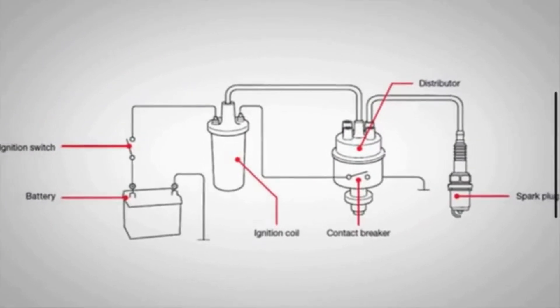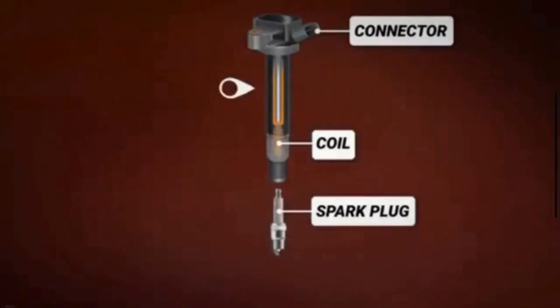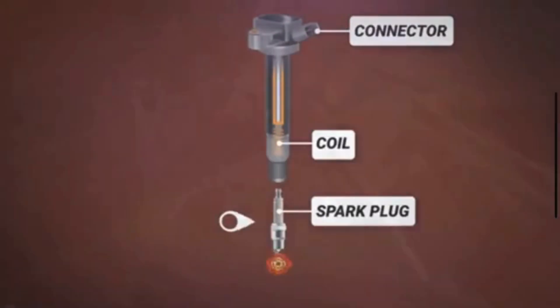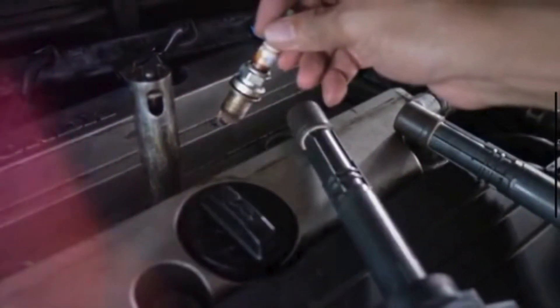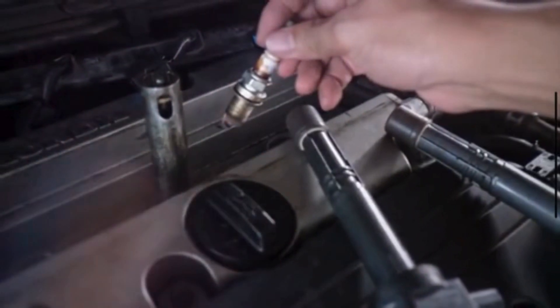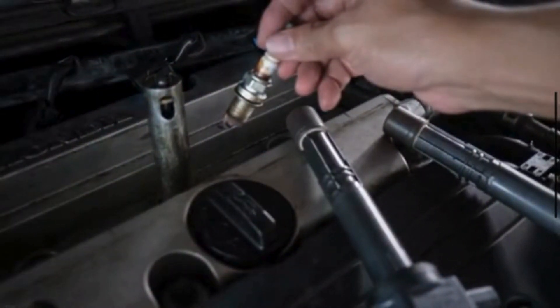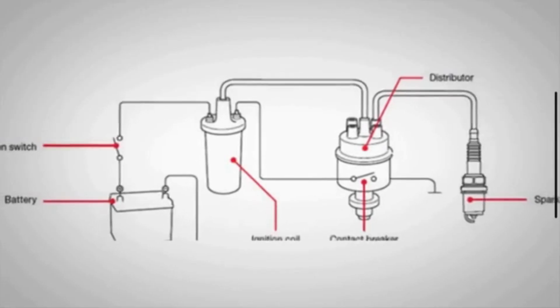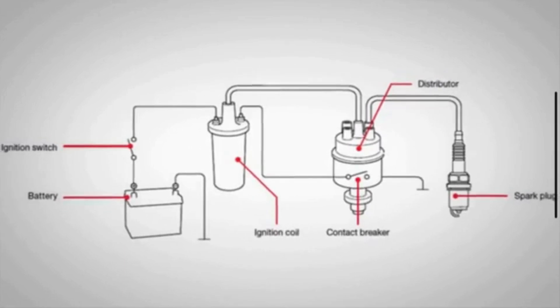The ignition coil acts like a transformer. The primary function of the ignition coil is to transform the low-voltage electrical power from the battery into the high-voltage electrical power needed to spark the spark plugs. This high-voltage spark is essential for igniting the air-fuel mixture in the combustion chamber.